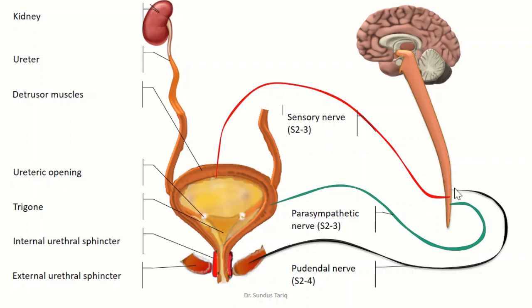The urinary bladder is also supplied by a skeletal motor nerve called the pudendal nerve, which supplies the external urethral sphincter.